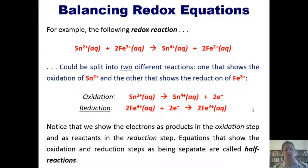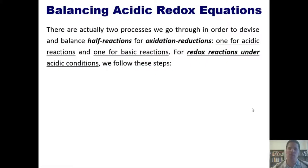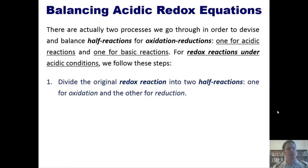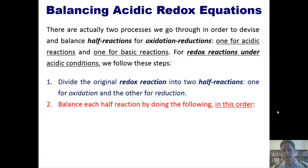By the time we're done, this will be as easy as knowing your own name. Now there are actually two processes we go through in order to devise and balance half-reactions for oxidation-reductions: one is for acidic reactions and the other is for basic reactions. For redox reactions under acidic conditions, we follow these steps. First, divide the original redox reaction into two half-reactions like I just showed you, one for oxidation and the other for reduction.